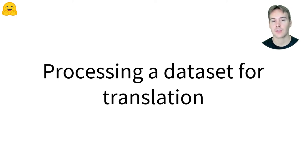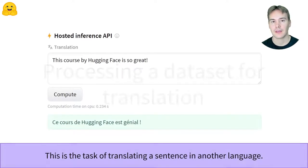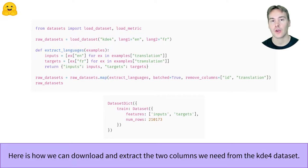Let's see how to preprocess a dataset for translation. This is the task of translating a sentence in another language. This video will focus on how to preprocess your dataset once you've managed to put it in the following format: one column for the input text and one for the target text. Here is how we can achieve this with the datasets library on the KDE4 dataset for English to French translation.